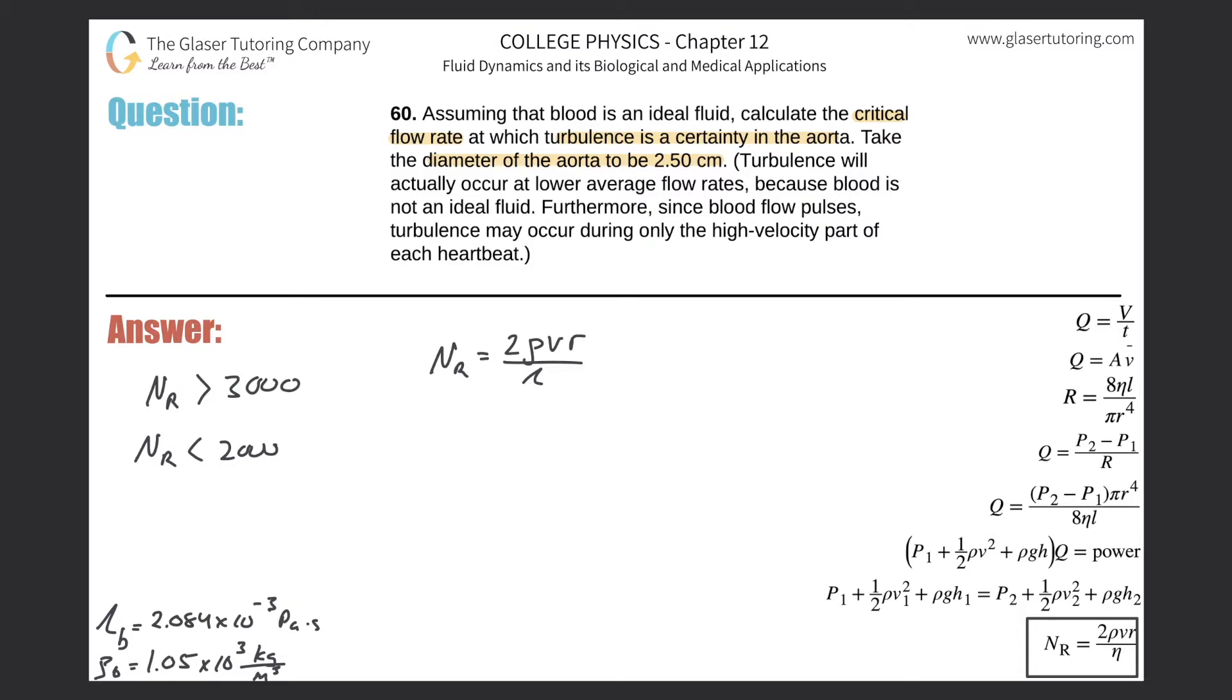We're trying to find the velocity, and they tell us the diameter of the aorta, so we can figure out the radius. The only thing we don't know is the velocity, but remember they're asking for flow rate Q.